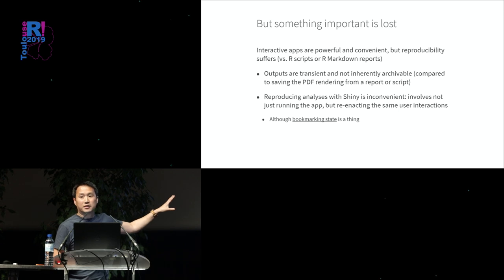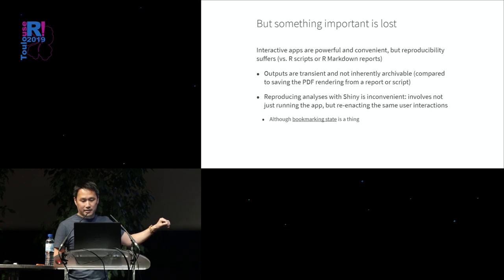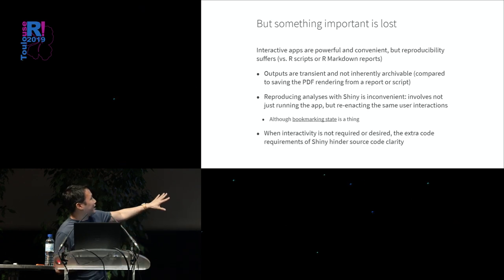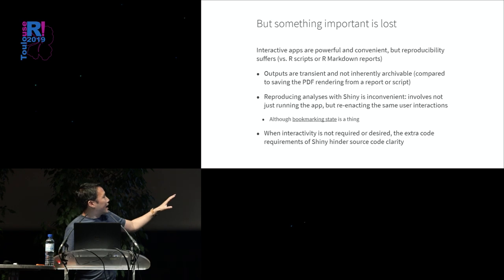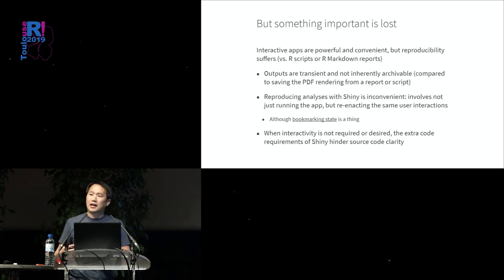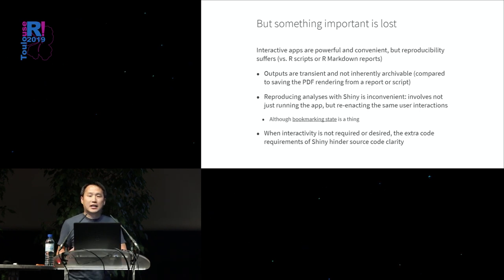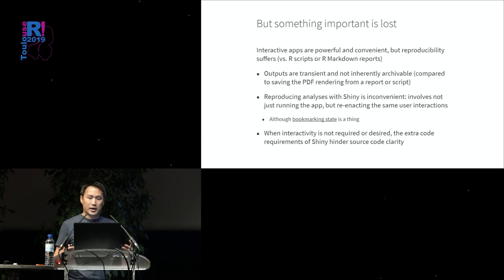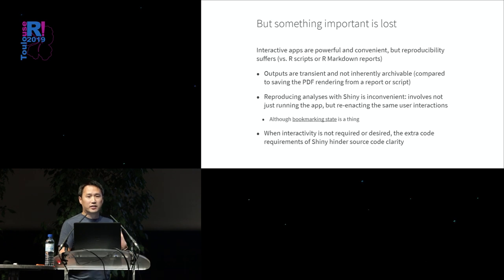Shiny does have a bookmarkable state feature, but that kind of interferes with my narrative about Shiny not being great, so we won't focus on that today. When you're not in interactive mode — when you've landed on the parameters and outputs you care about — examining the source code is harder for a Shiny app than for a traditional R script. There's more visual noise related to Shiny and interactivity that you don't want to deal with when trying to understand what methods were used.